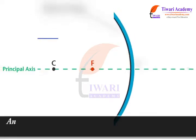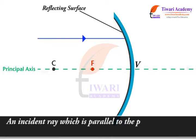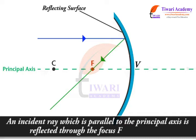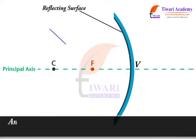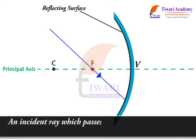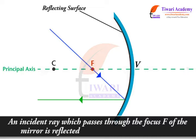An incident ray which is parallel to the principal axis is reflected through the focus F of the mirror. An incident ray which passes through the focus F of the mirror is reflected parallel to the principal axis.